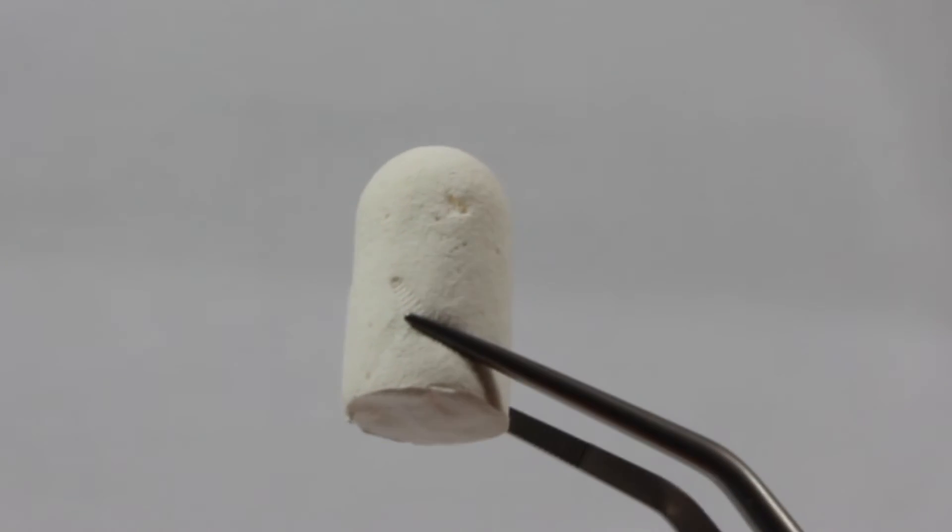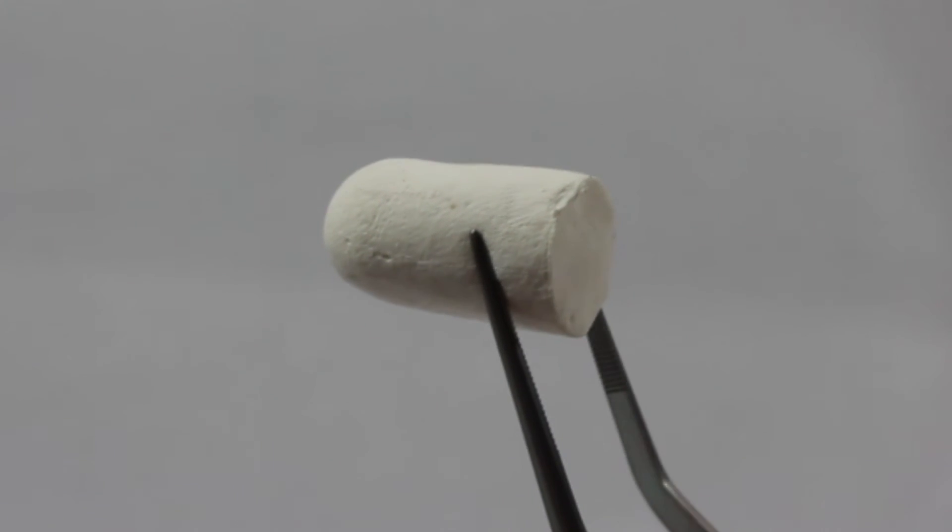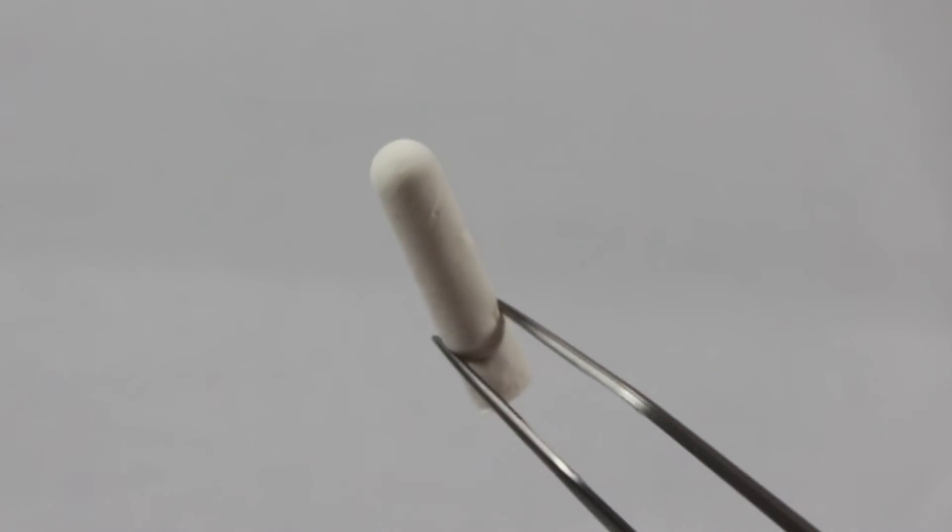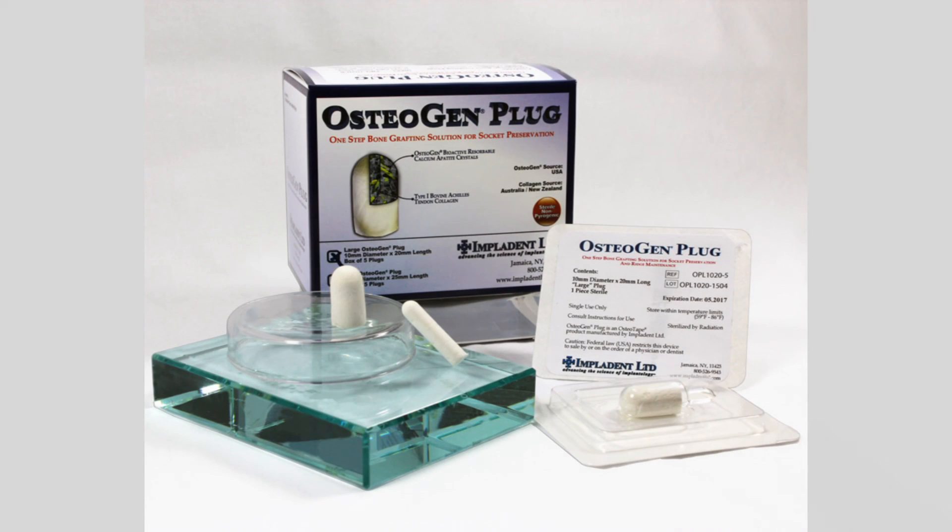There are a number of techniques used to graft extraction sites that all involve filling a site with particulate graft material and covering the graft with a collagen plug or other type of membrane. By combining the graft with a collagen carrier, the Osteogen plug saves the end user both time and money.